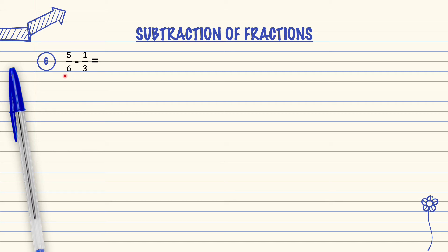Between number 6 and number 3, which number is smaller? Yes, number 3. So this means number 3 will be changed to become number 6, like this denominator. Let's look at the 3 times table.